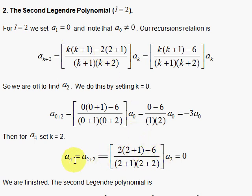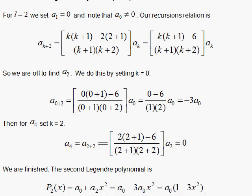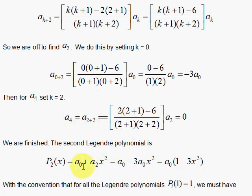There's no a sub 4, there's no a sub 6, there's no a sub 8, and so on, so we're finished. And the second Legendre polynomial then is a sub 0 plus a sub 2 x squared.